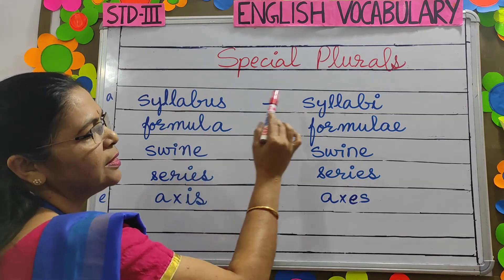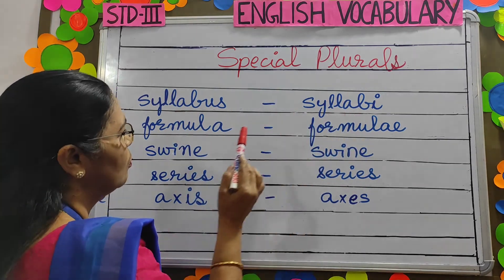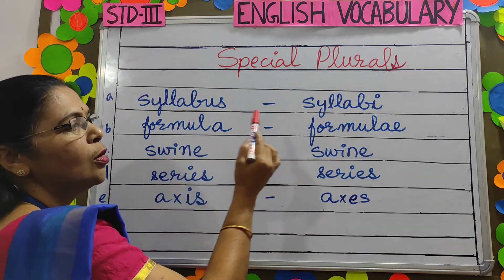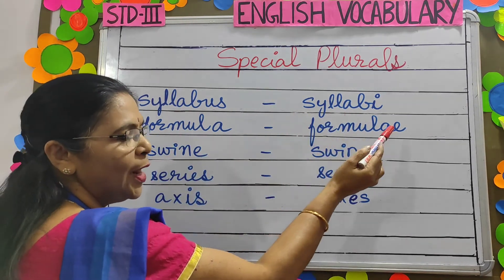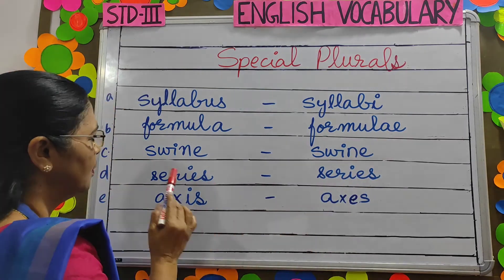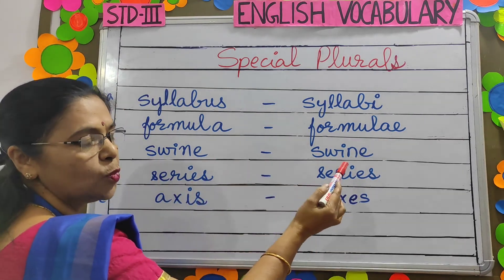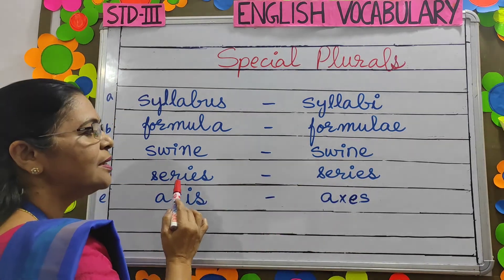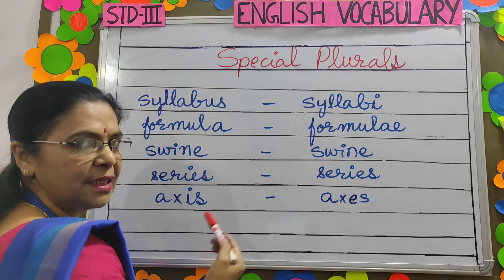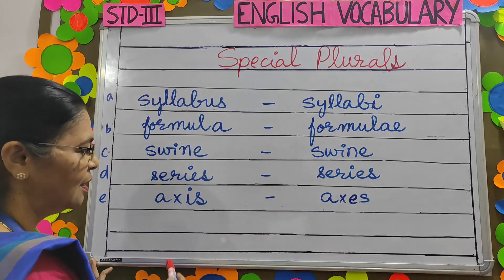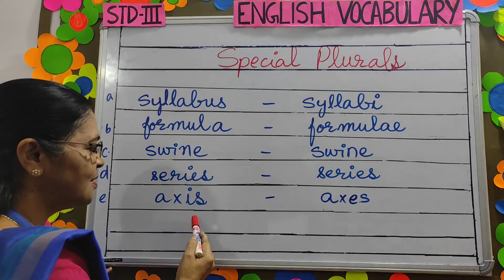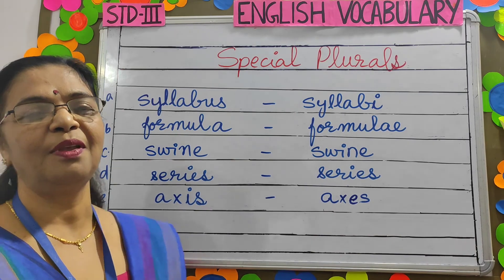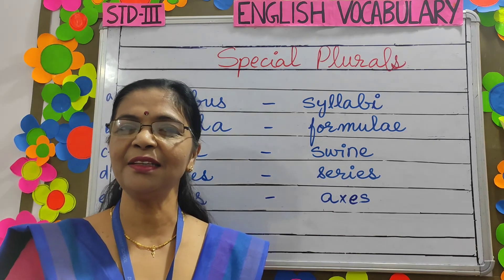Let's revise once more. Syllabus — syllabi. Formula — formulae. Swine — swine. Series — series. Axis — axes. Clear, children?